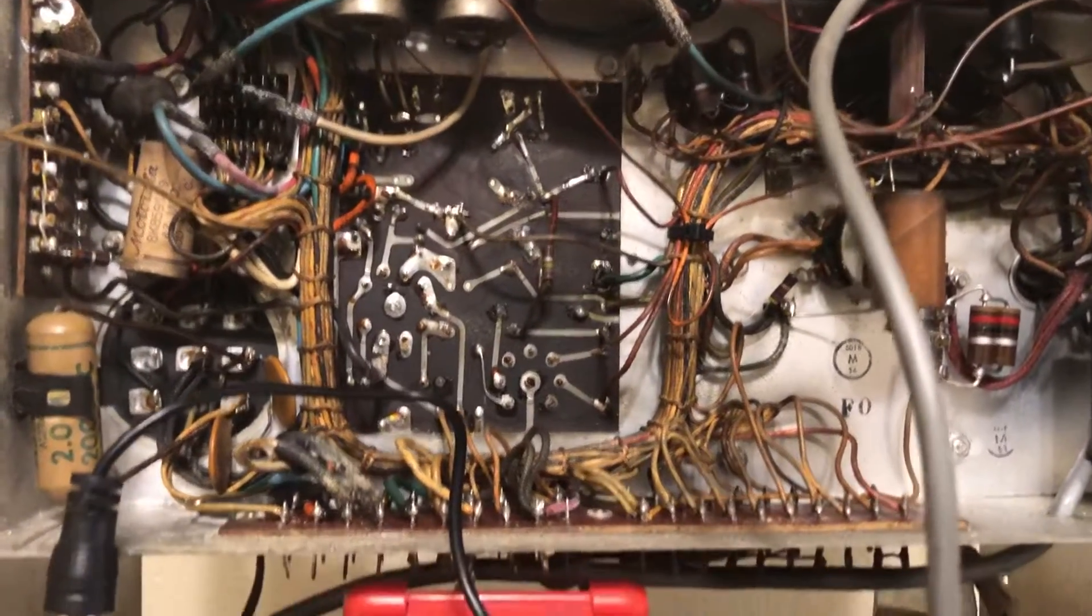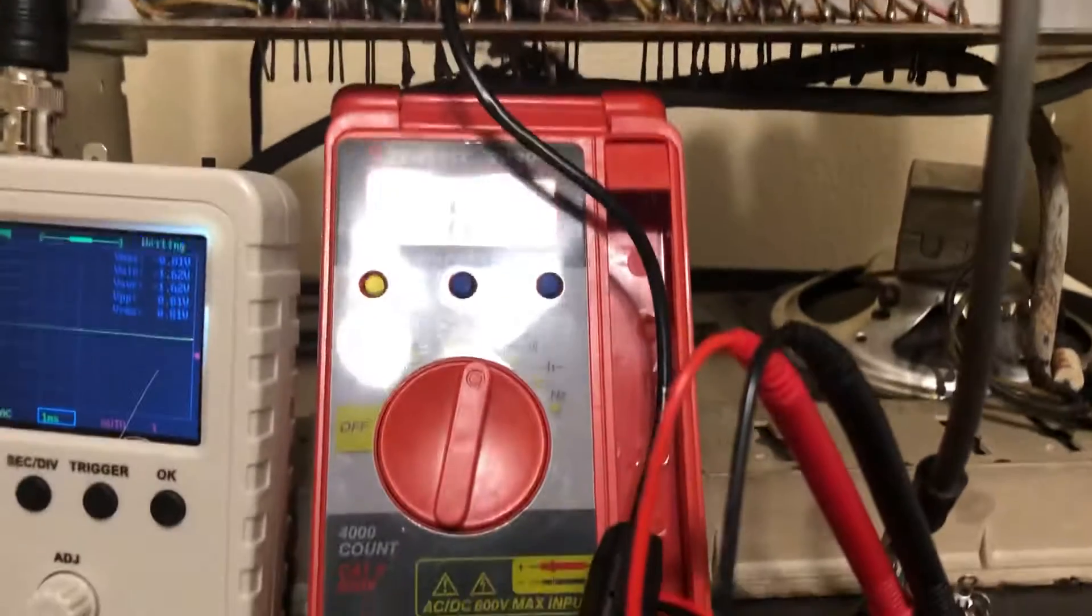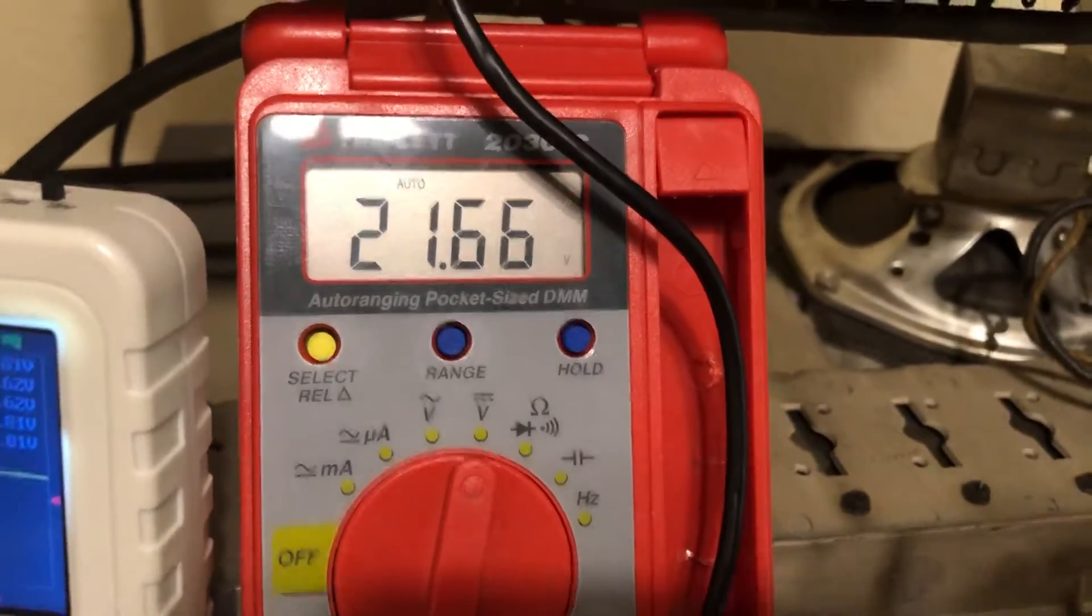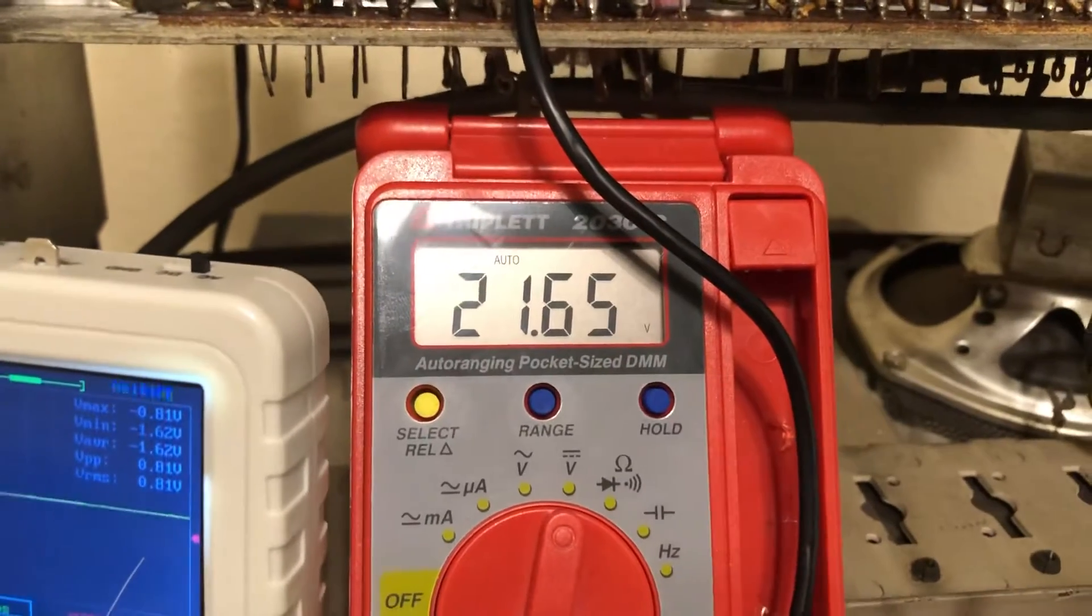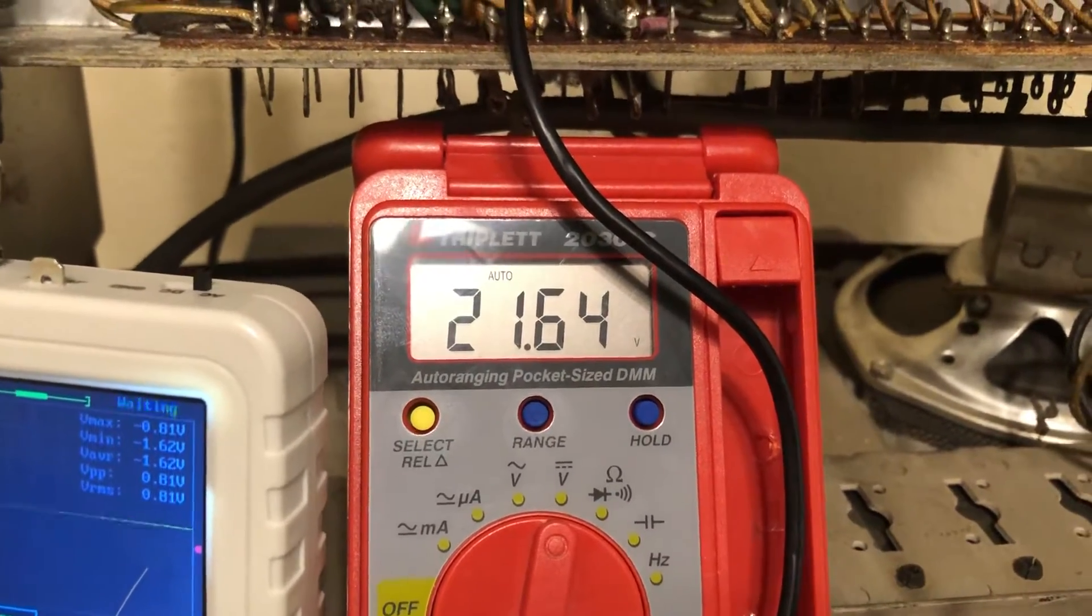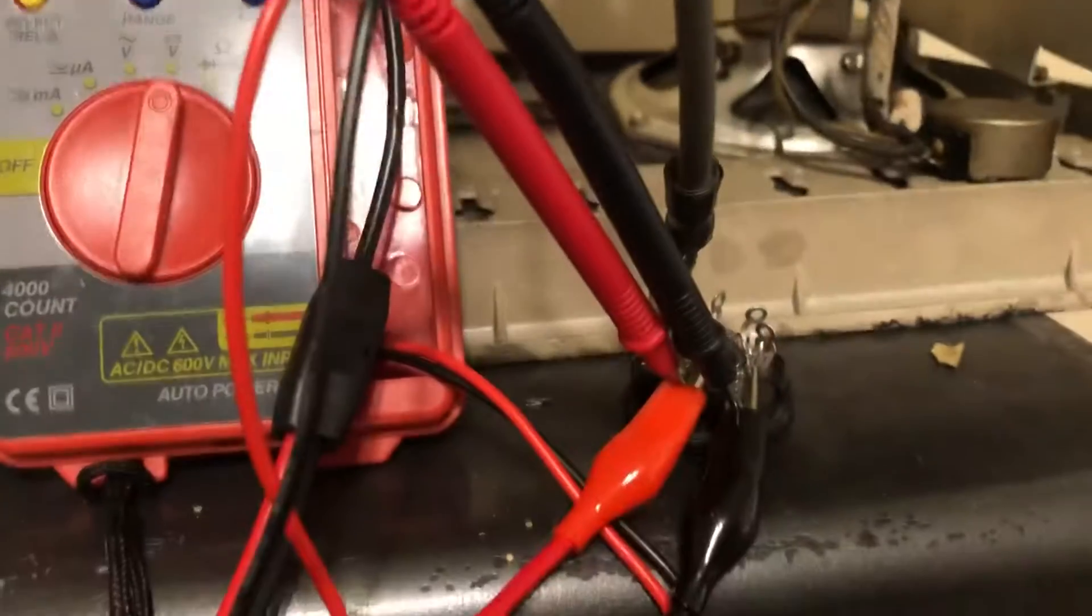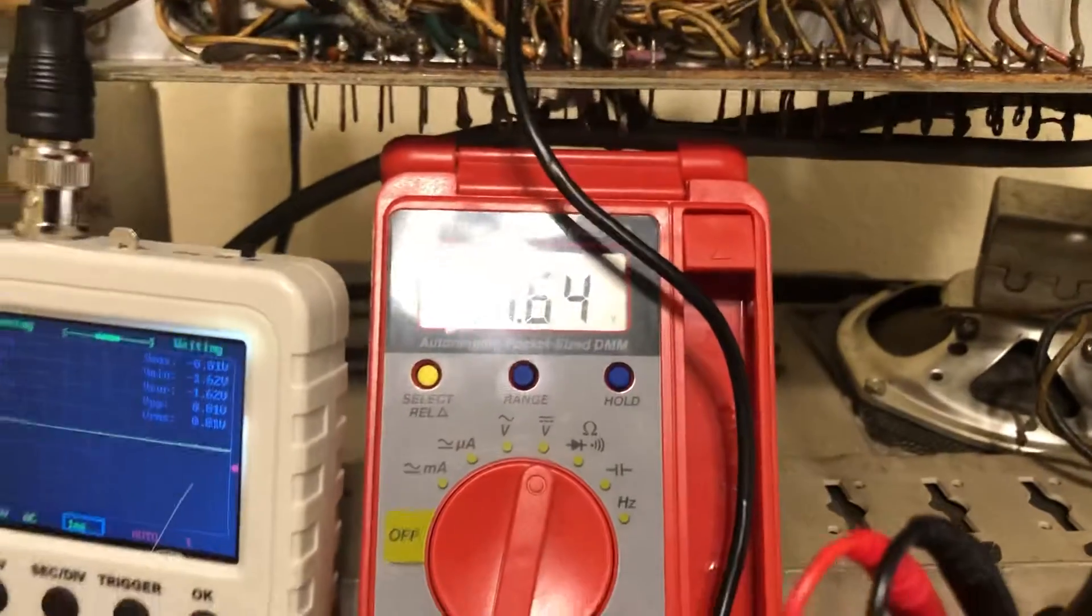It's on right now and I have it hooked up to a multimeter. The output here is putting out 21.6 volts DC, which according to everything I've read online, that's what the output voltage is.